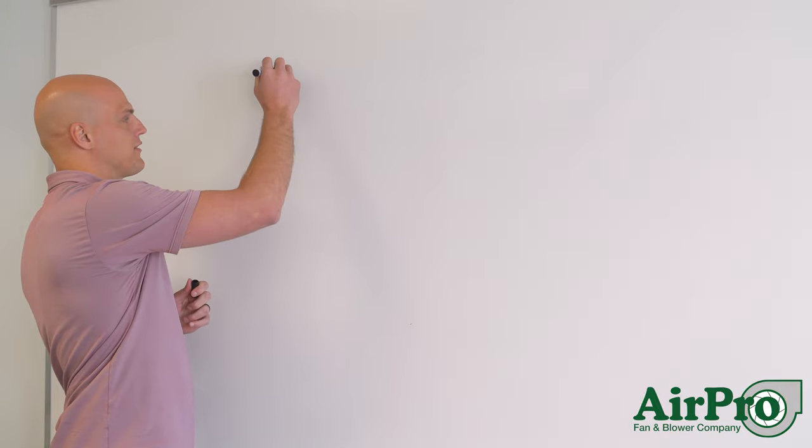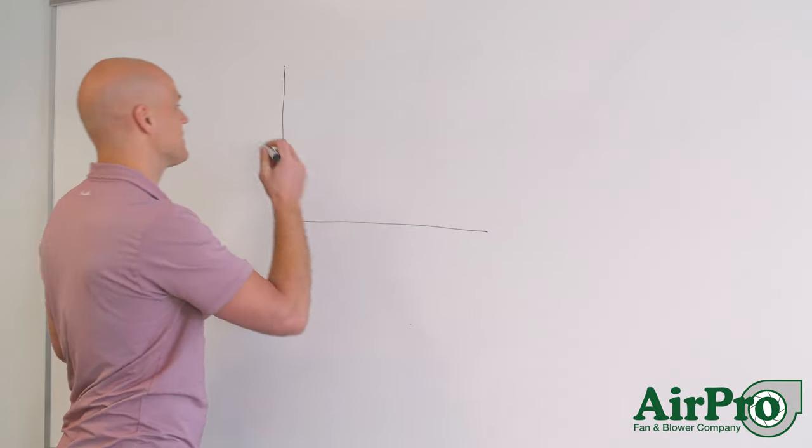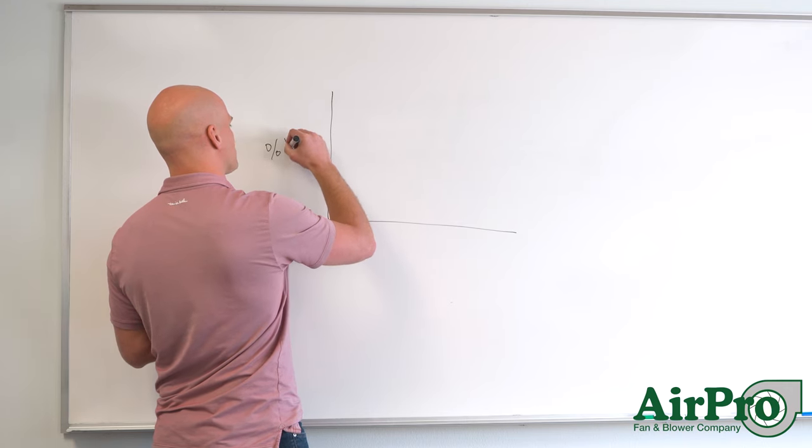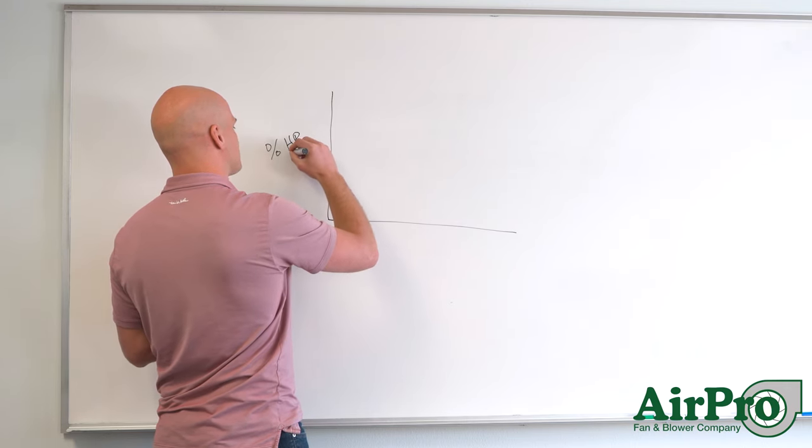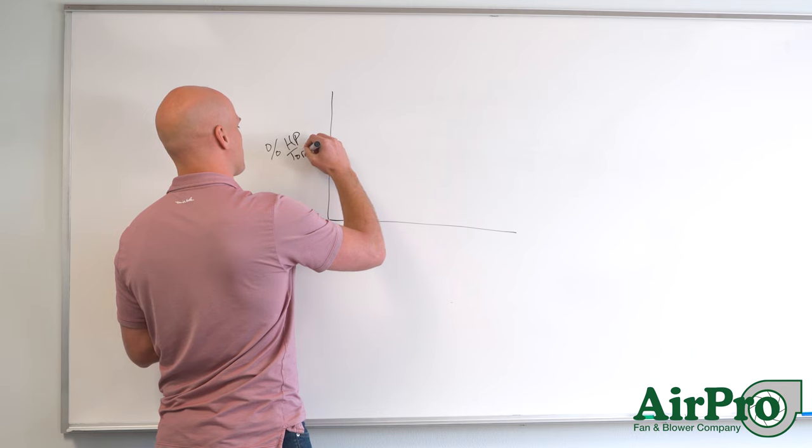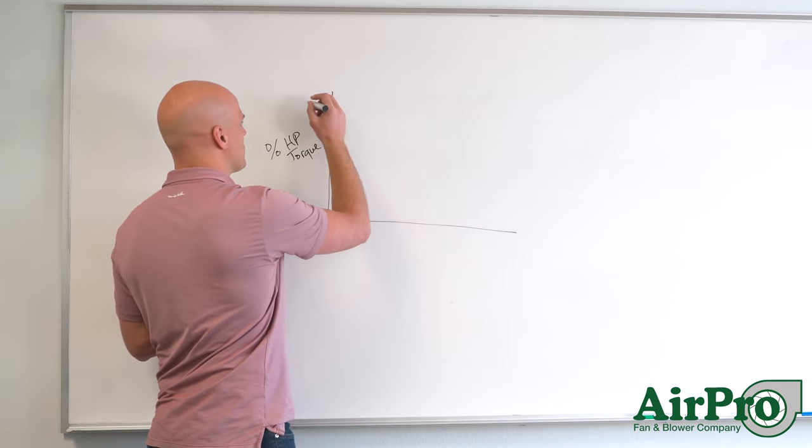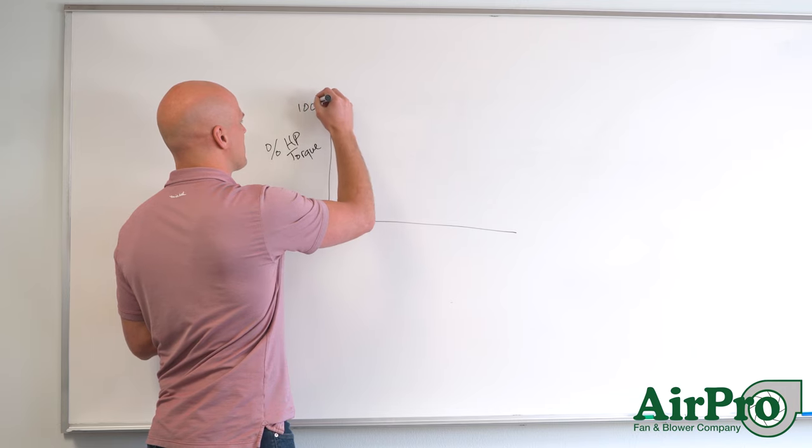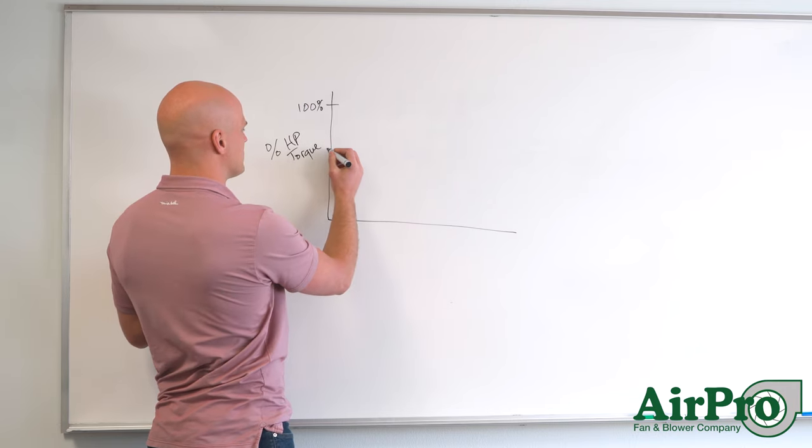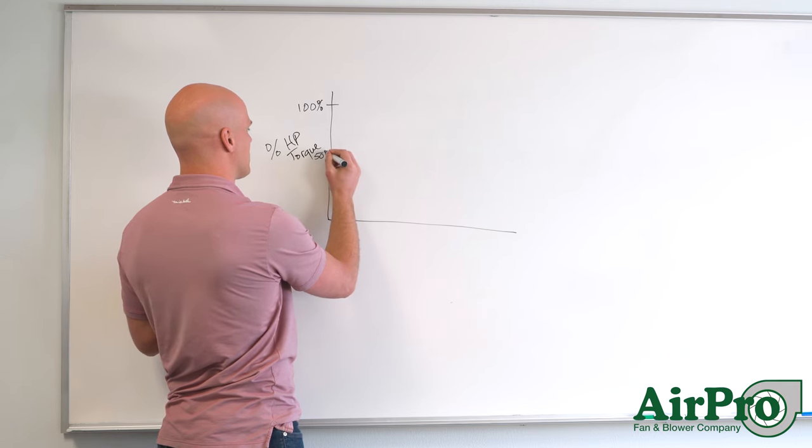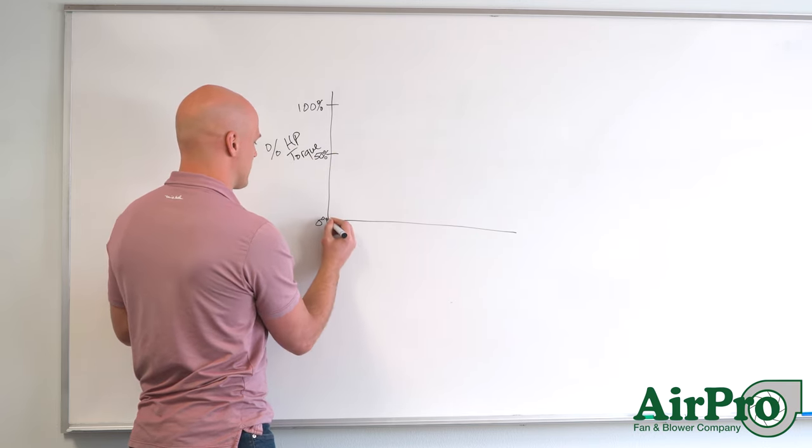So we're going to draw a graph here and on the y-axis we're going to have percent of horsepower and percent of torque. So up here we've got 100%, so then we're looking at 50% right here down to 0% right here.